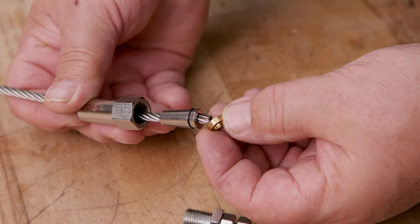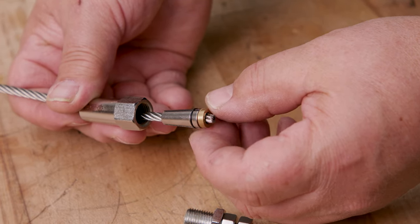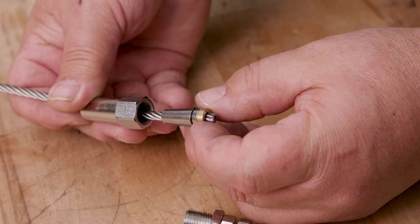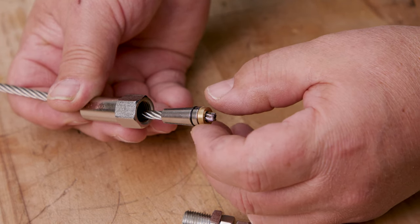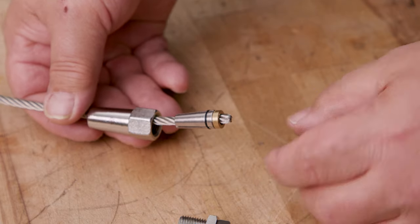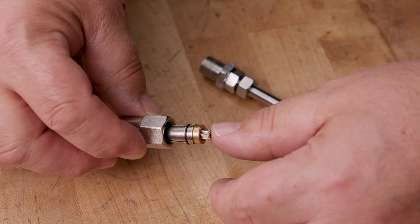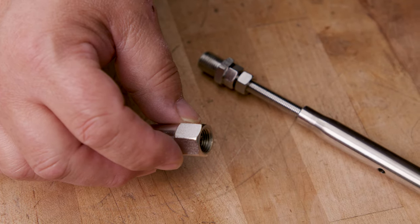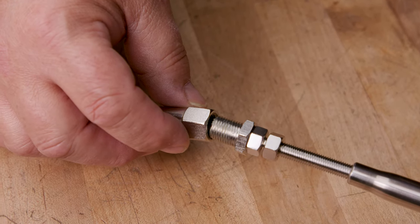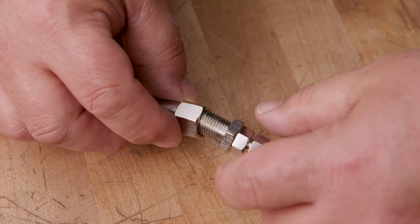Then we're going to take the pressure washer and place it on the end, and then make sure there's 3/16 inch of cable sticking out of the end. Right there. Now we're going to slide the cone over this, being sure that we don't move it, and then we'll screw in our assembly.